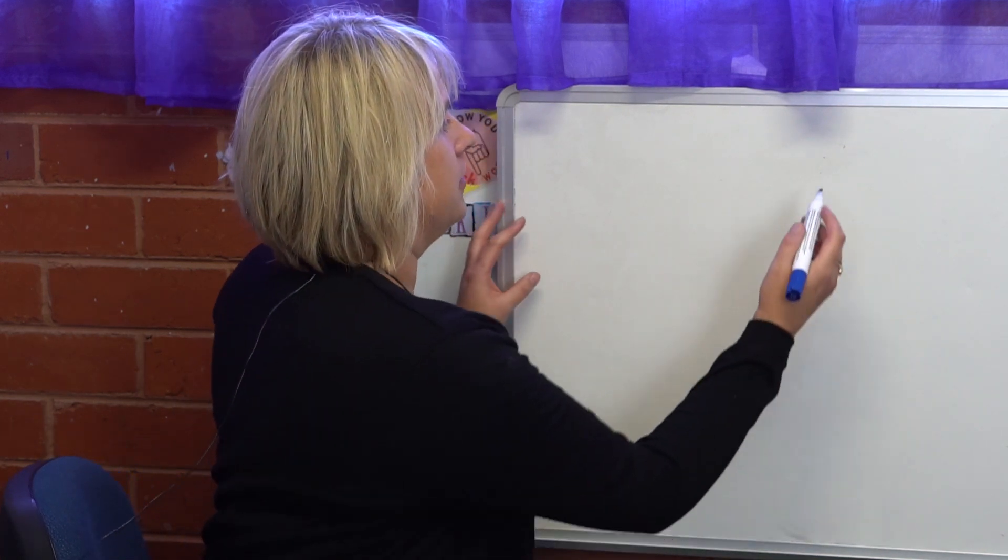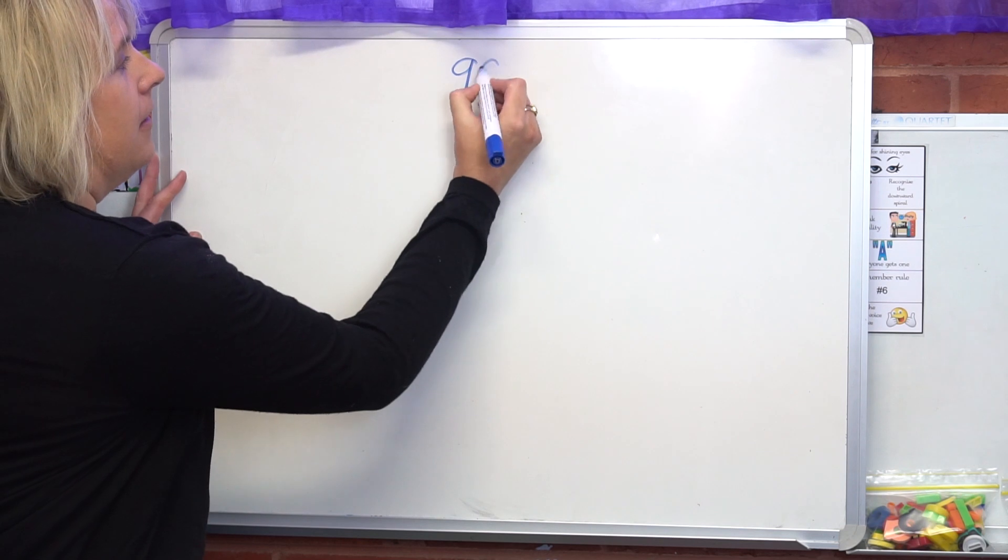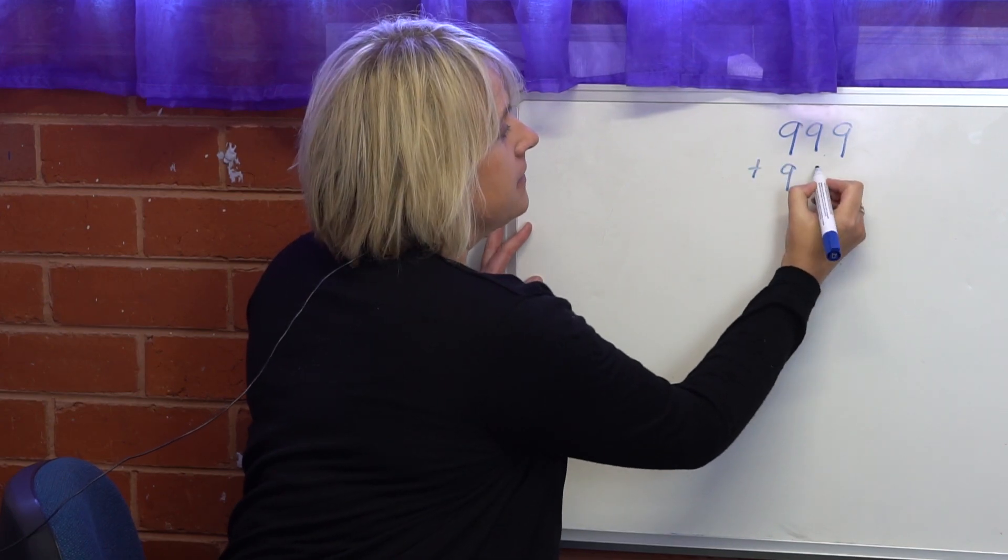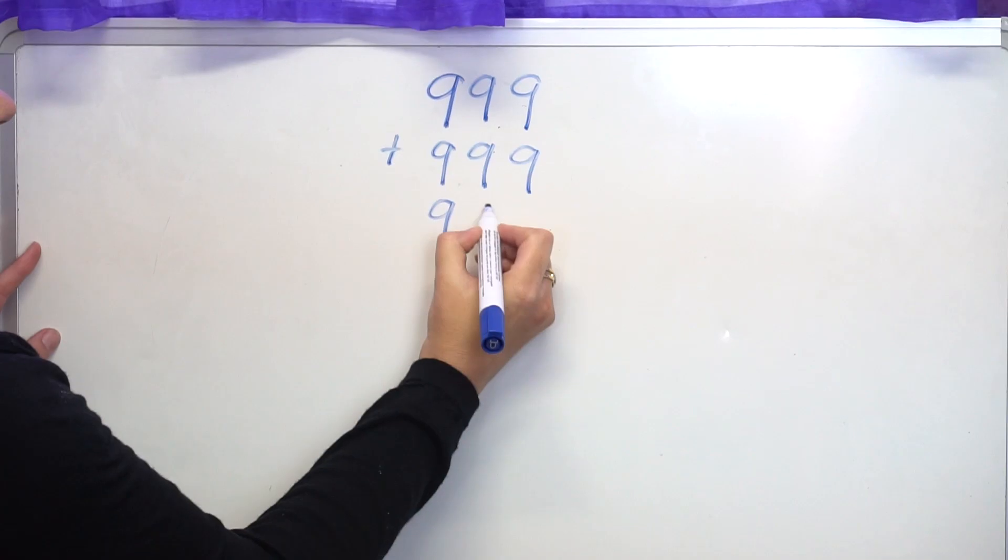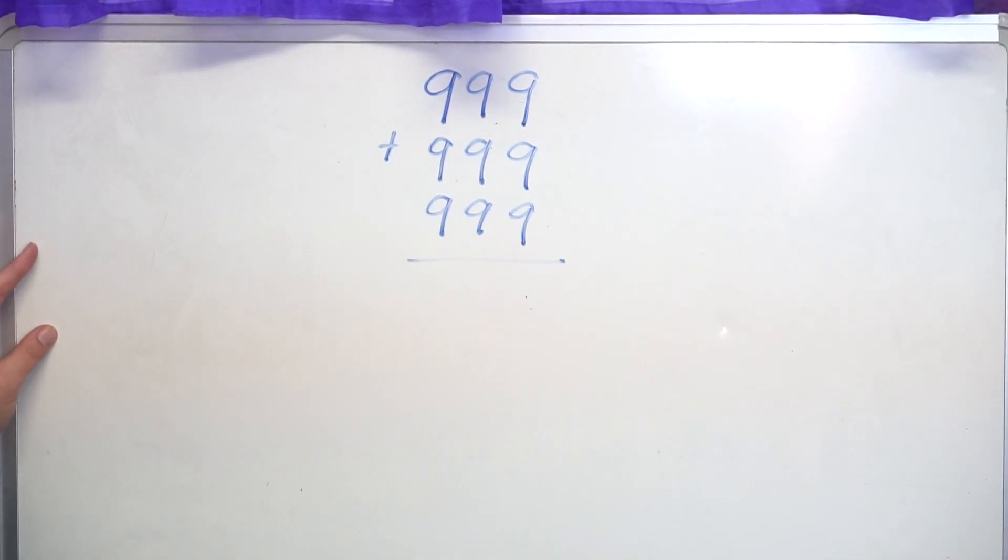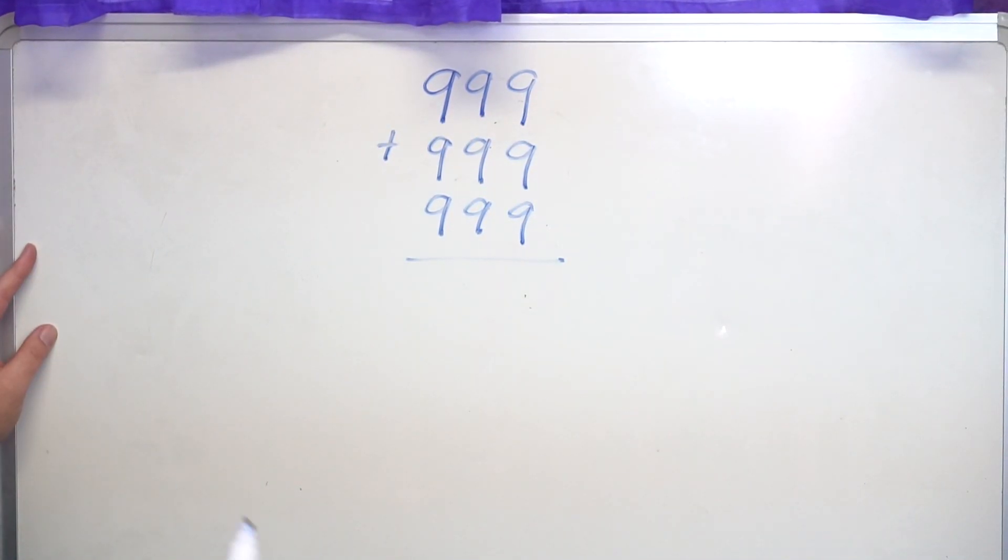I'm going to demonstrate to you why this is not always the most effective strategy. So I'm going to show you here if we had an equation that looked like this and I used my vertical addition regrouping.